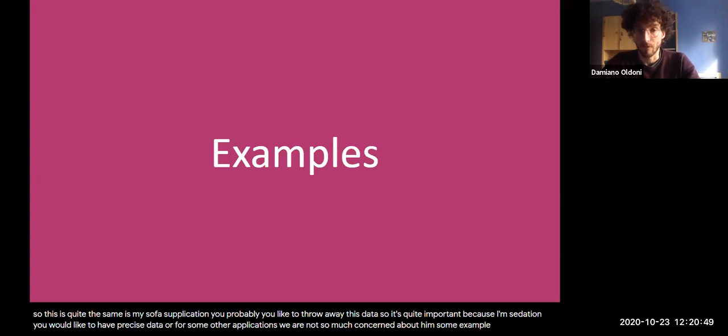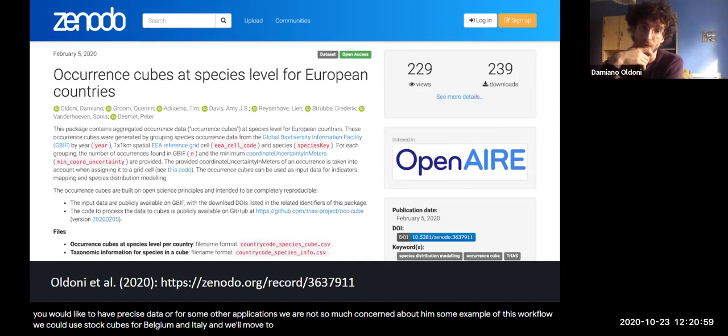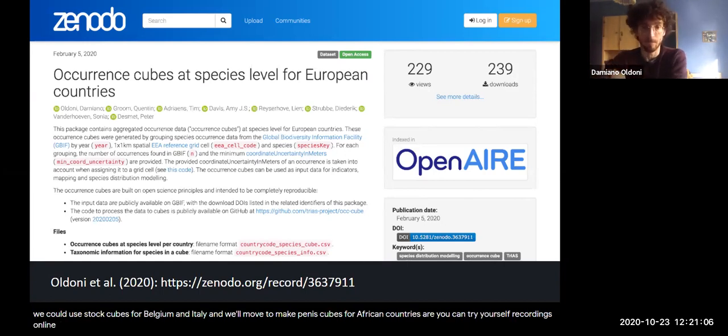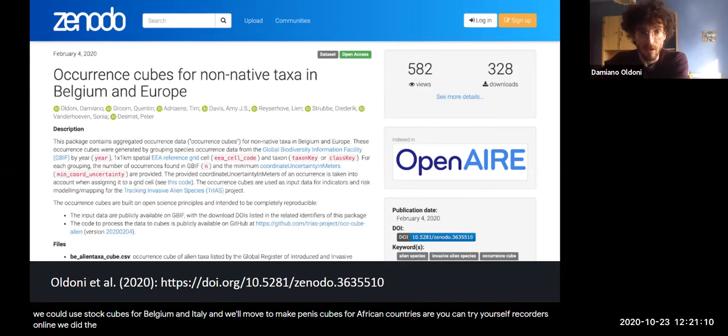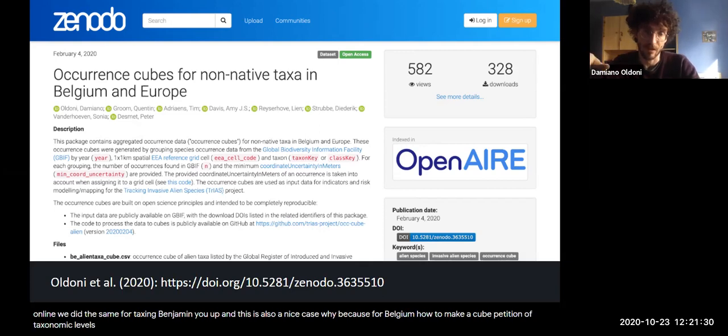Some examples of this workflow. We produce occurrence cubes for Belgium and Italy, and we will further move to make occurrence cubes for other European countries. You can try yourself. The code is online. We did the same for non-native taxa in Belgium and Europe. And this is also a nice case because for Belgium, we also show how to make a cube with a not homogeneous partition at taxonomic level. So we have some species, but also some subspecies for example. This is also possible, obviously, thanks to the GBIF backbone.